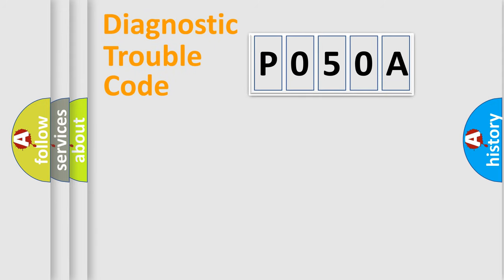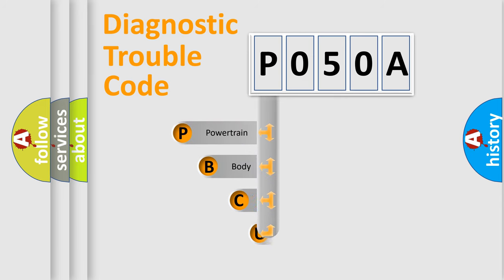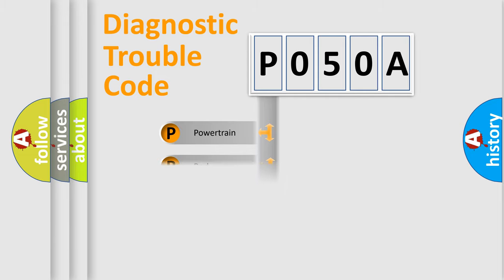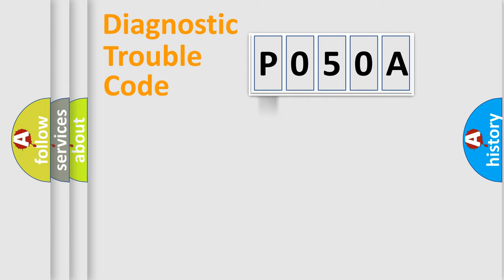Let's do this. First, let's look at the history of diagnostic fault code composition according to the OBD2 protocol, which is unified for all automakers since 2000. We divide the electric system of automobile into four basic units: Powertrain, Body, Chassis, and Network.